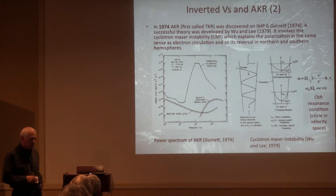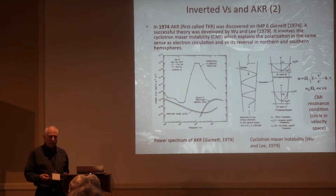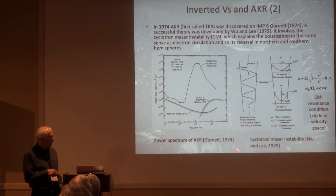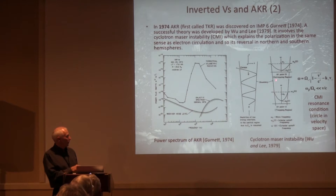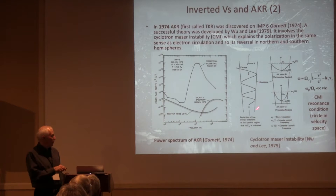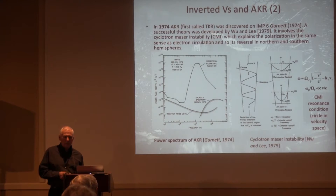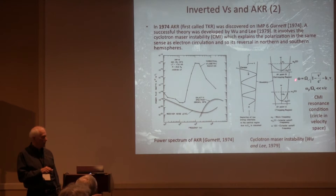This is one of the only times in space physics where there's been an elegant theory that survived for decades and everybody agrees it's right. This was C.S. Wu and Lou Lee, back when Lou was at Maryland, with the cyclotron maser instability. You have to have a density cavity; you have electron cyclotron waves; higher density outside and lower density inside. These waves can't escape until their frequency gets above the exterior plasma frequency, but in the meantime there are positive density gradients in electron velocity space that give rise to wave amplification. It's exactly like a gyrotron vacuum tube they use to heat plasmas in tokamaks.